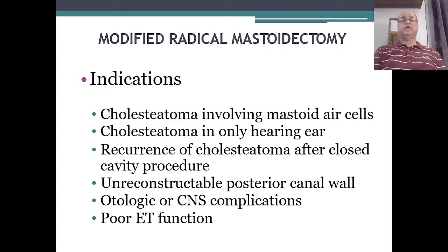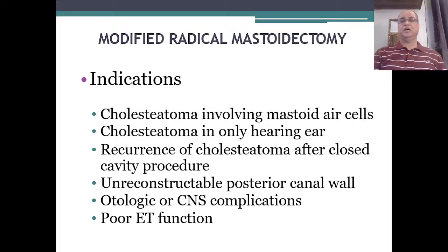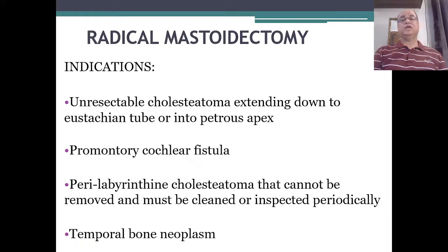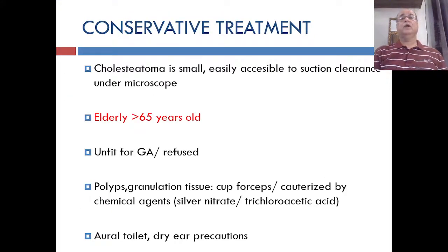Indications for modified radical mastoidectomy include: cholesteatoma involving the mastoid air cells, cholesteatoma in the only hearing ear, recurrence of cholesteatoma after closed cavity (canal wall up) procedures, unreconstructable posterior canal wall, pathological or CNS complications, and poor eustachian tube function. Indications for radical mastoidectomy are: unresectable cholesteatoma extending to the eustachian tube or petrous apex, promontory cochlear fistula, perilabyrinthine cholesteatoma that cannot be removed and must be cleaned periodically, and temporal bone neoplasms.